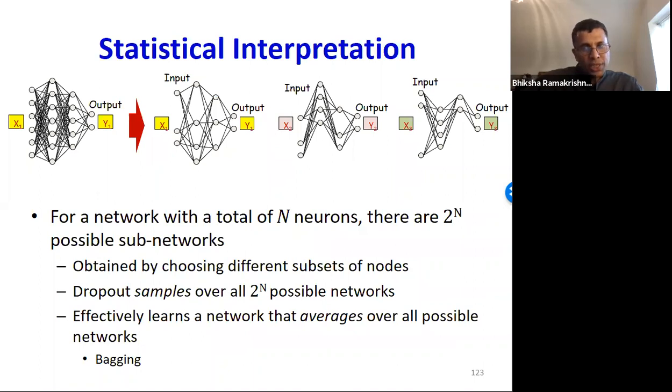The statistical motivation that's generally offered to justify dropout is that it's some sort of bagging. For a network that has a total of n neurons, each of the neurons can be switched on or off. So there are two raised to n possible sub-networks that we can compose simply by switching on and off the neurons. The argument is that dropout samples over these two raised to n possible networks. So the network seen by each input is one of these two raised to n possible networks.